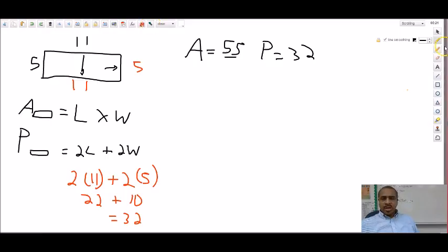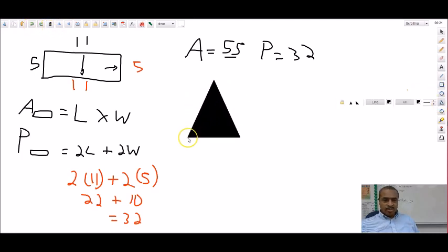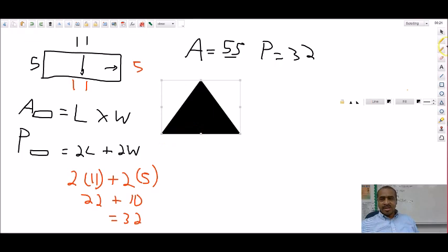Now the second thing here, the shape we're going to come across is the triangle. Let's see, get a better triangle here. There we go. All right, so we got this triangle here and so we'll say this side is seven.